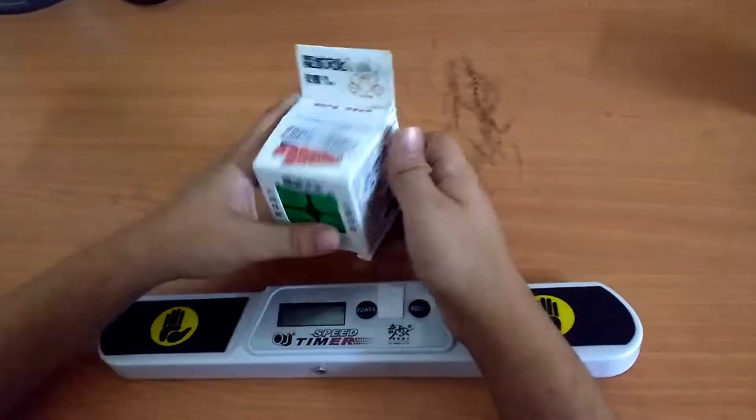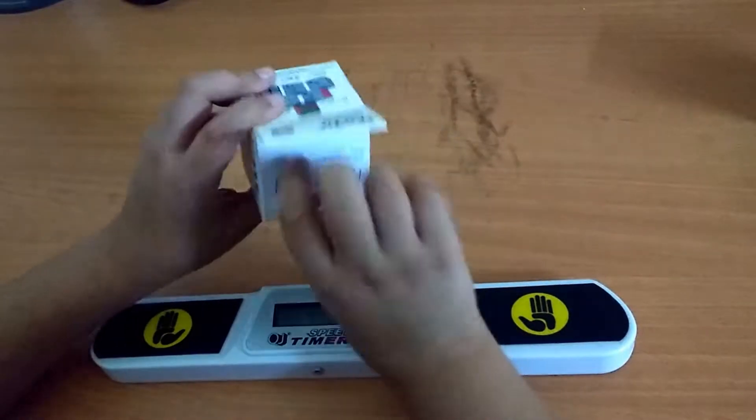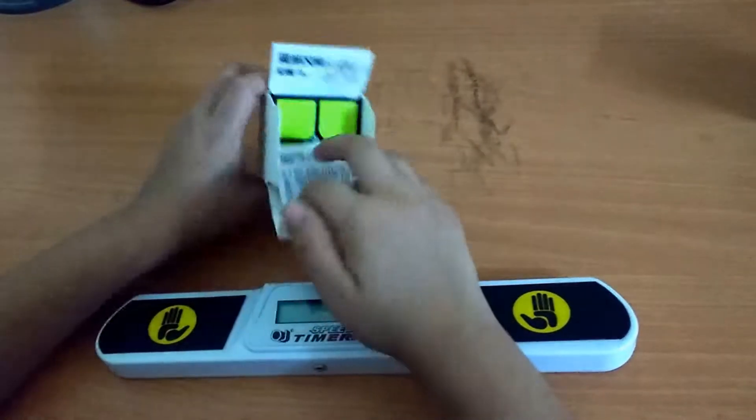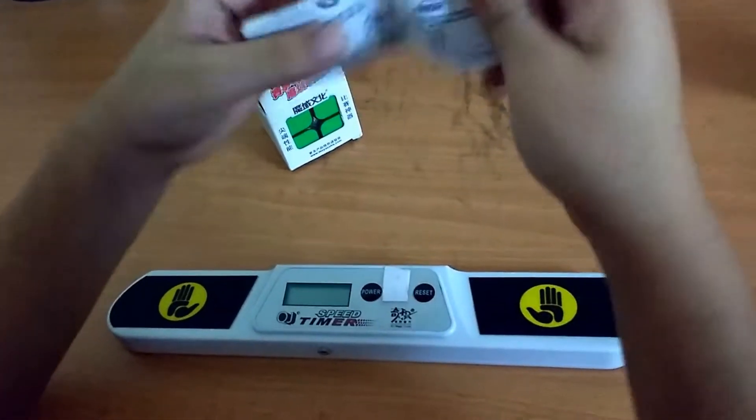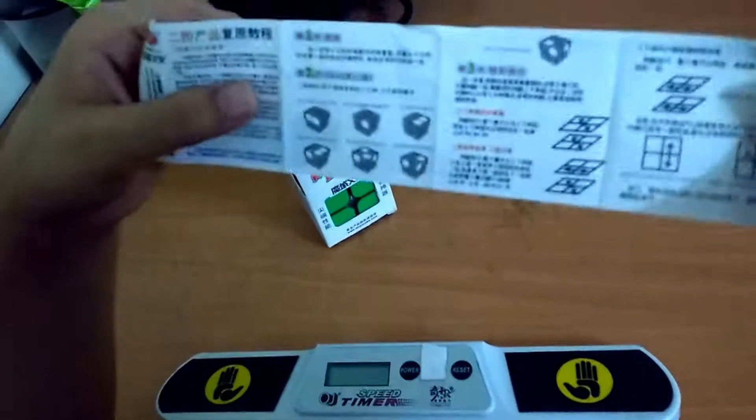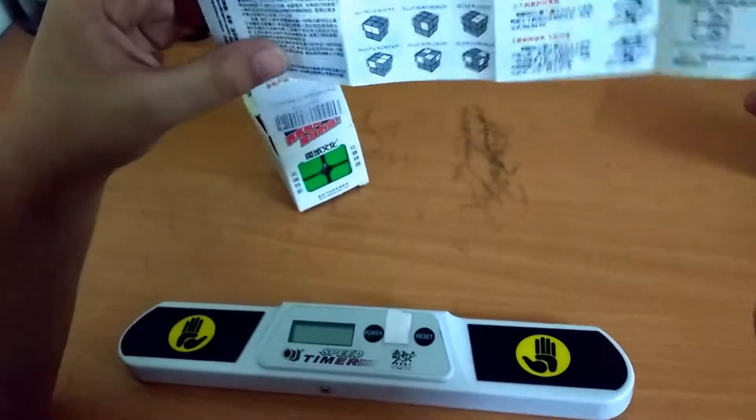Inside the box was the cube in the plastic package, which we do not have right now, and this manual. As you can see, the manual tells you how to solve the Rubik's Cube in Chinese, unfortunately.